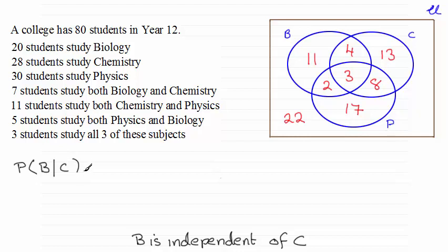Let's look at this probability. The probability of a student being picked doing biology, given that they do chemistry — well, if they do chemistry, it'll be out of this section here, a total of 28 students.